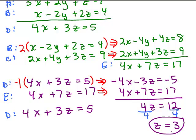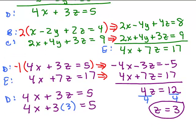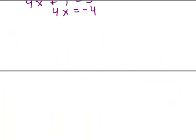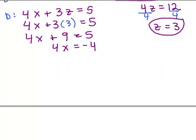From 4X plus 9 equals 5, subtracting 9 from both sides gives 4X equals negative 4, and dividing by 4 gives X equals negative 1. So now I know the value of X and the value of Z.